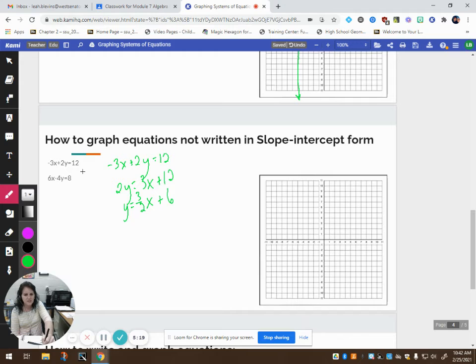So to graph this, I want to start at positive 6. My slope tells me to go up 1, 2, 3, and over 2. Or down 1, 2, 3, and over 2. Down 1, 2, 3, and over 2. And my slope is positive, so it should be going up as it moves left to right. So it looks like I did this correctly.